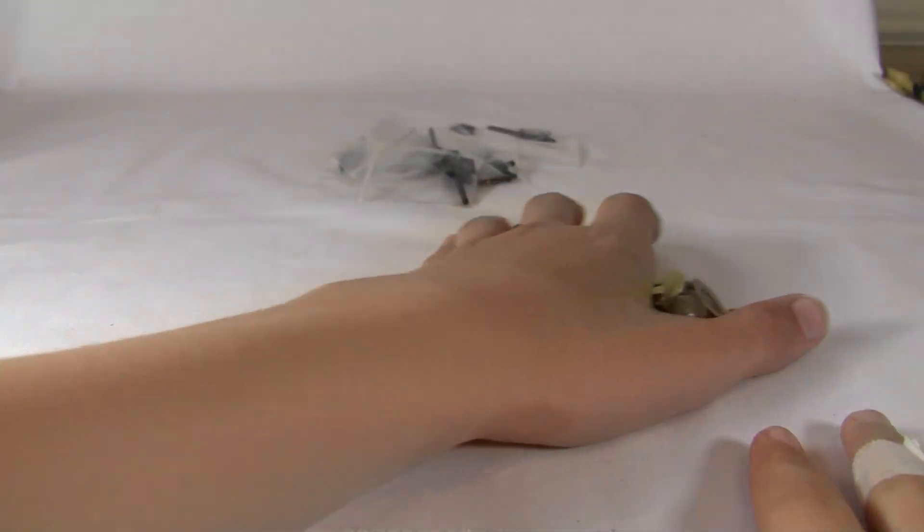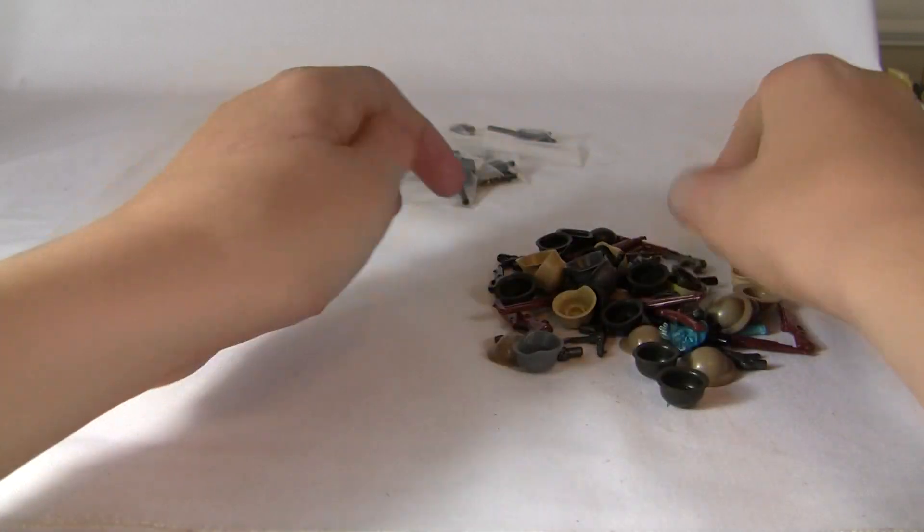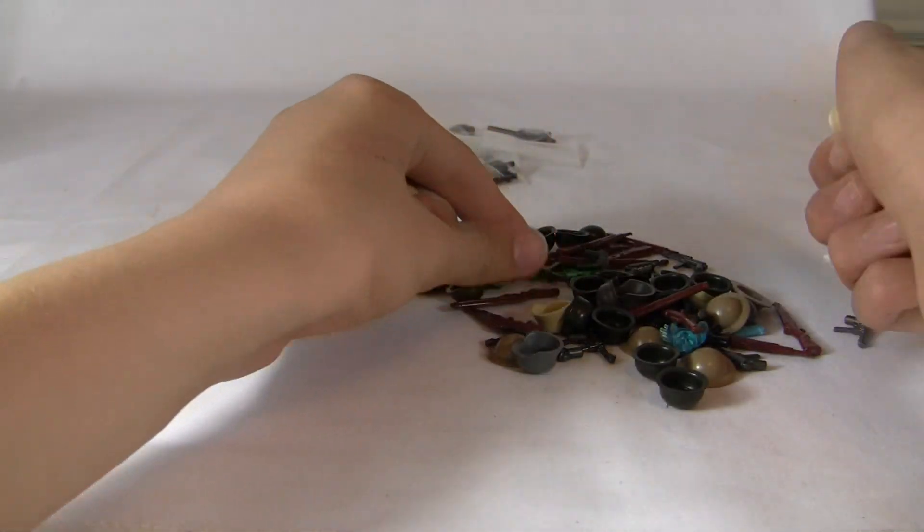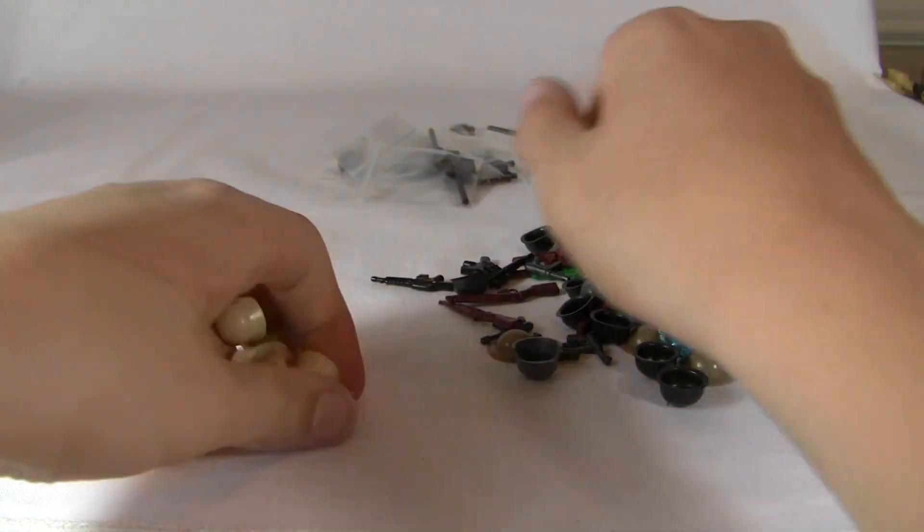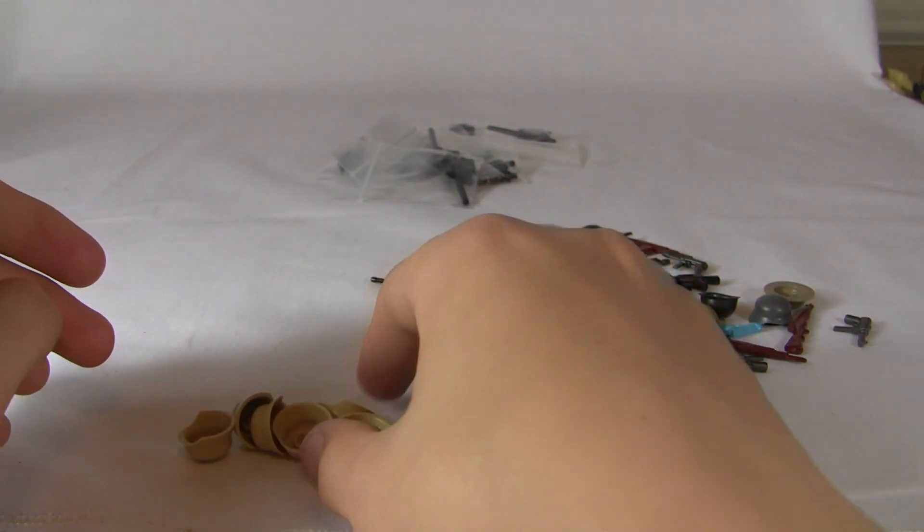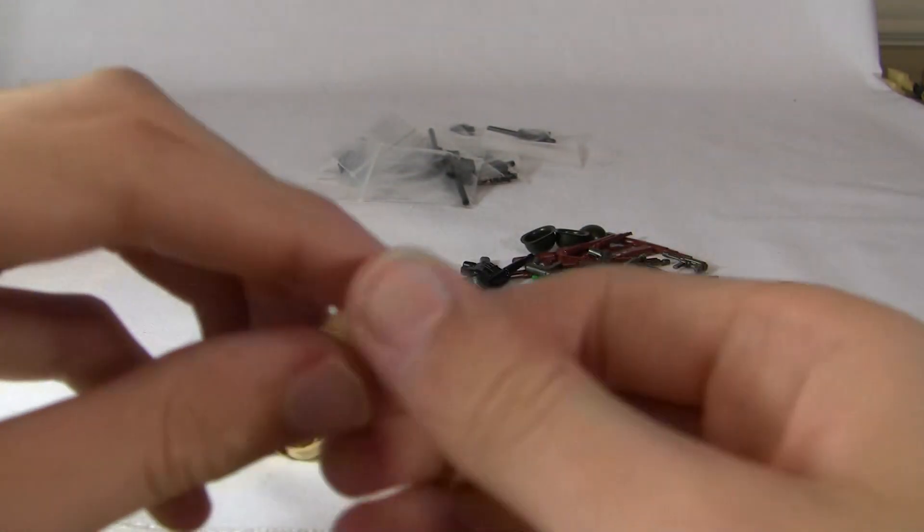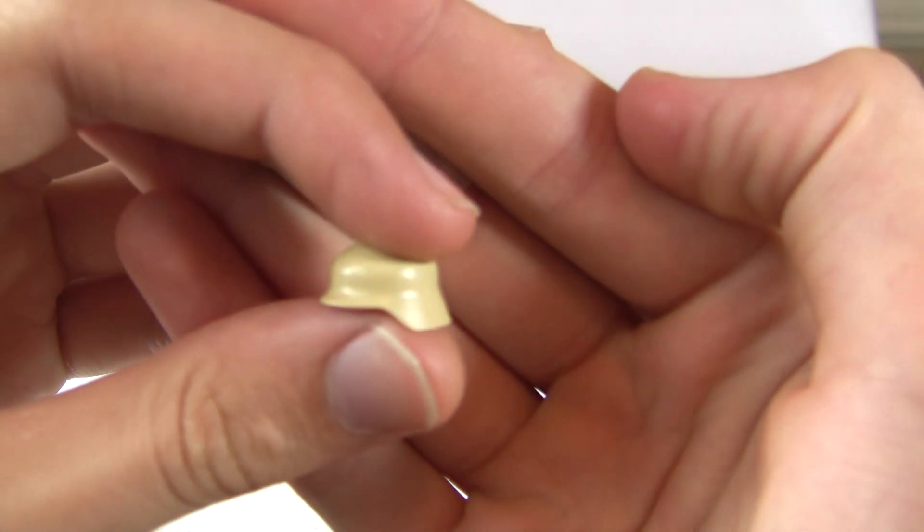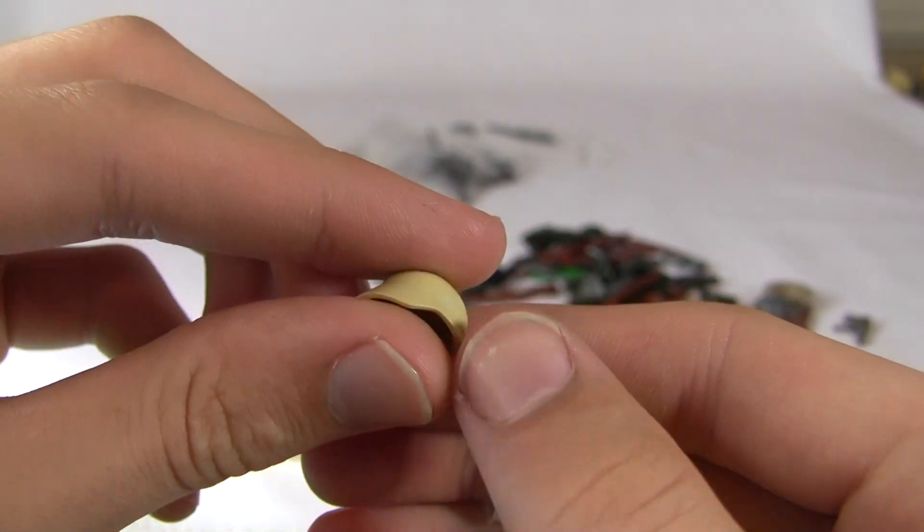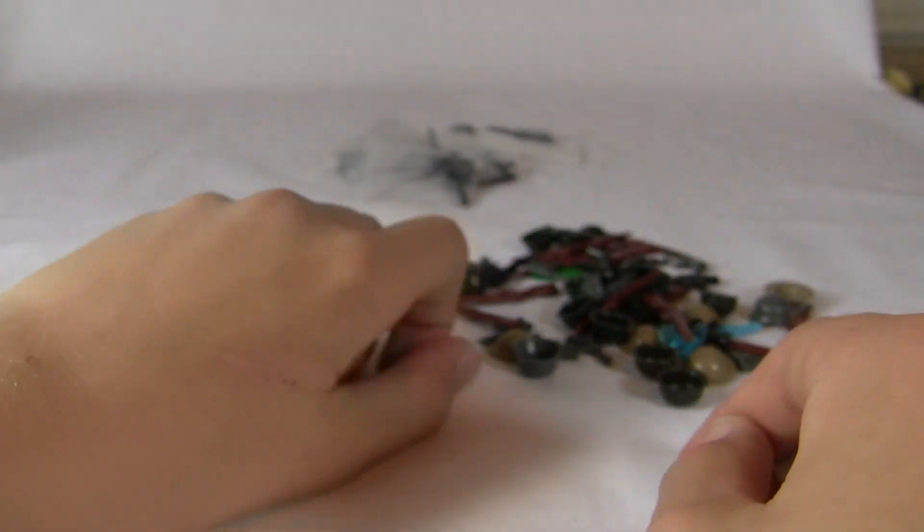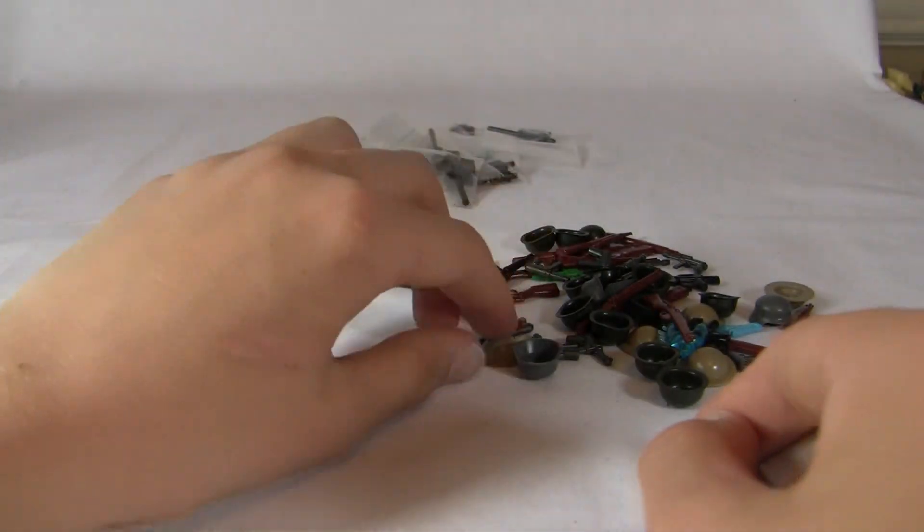Okay, so we'll start off with the helmets. So I believe we got 8 tan stahlhelms. Let's count: 2, 4, 6, 8. Yeah, 8 tan style helms. So we got some of those for Africa Corps Troopers.